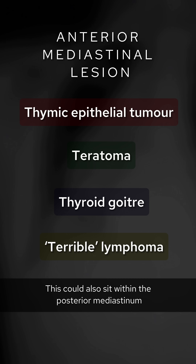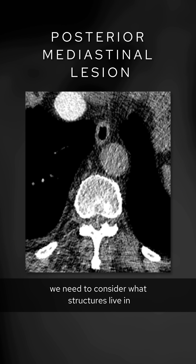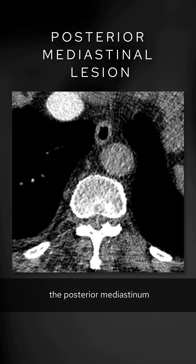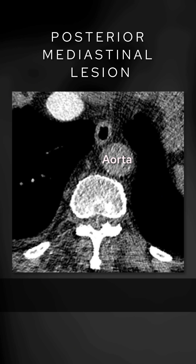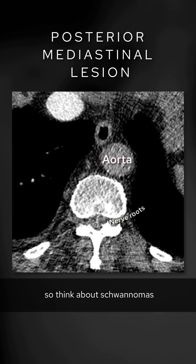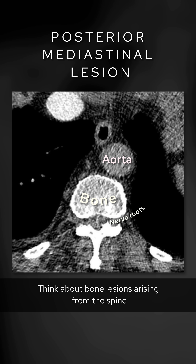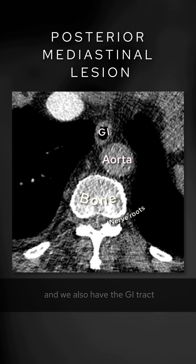However, this could also sit within the posterior mediastinum. To think of the differential for this, we need to consider what structures live in the posterior mediastinum. We have the descending aorta, so aneurysms here can give you an abnormality on chest x-ray. There are nerve roots arising from the spine, so think about schwannomas. Think about bone lesions arising from the spine. And we also have the GI tract, so the esophagus heading into the stomach.